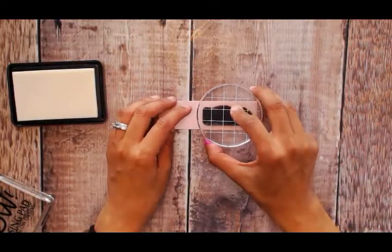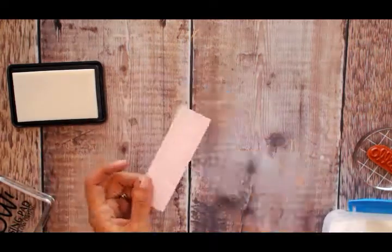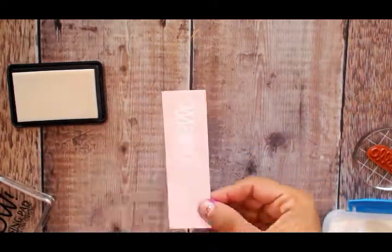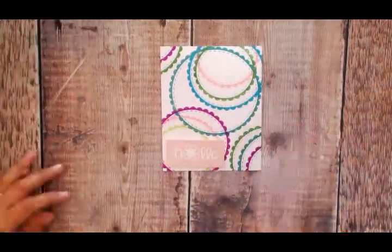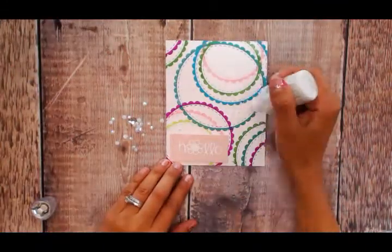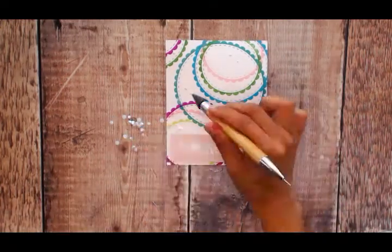I'm going to place that and heat set. We're going to trim it and place it on the card with foam adhesive. To top it off, we're going to be using some Pretty Pink Posh jewels in white.